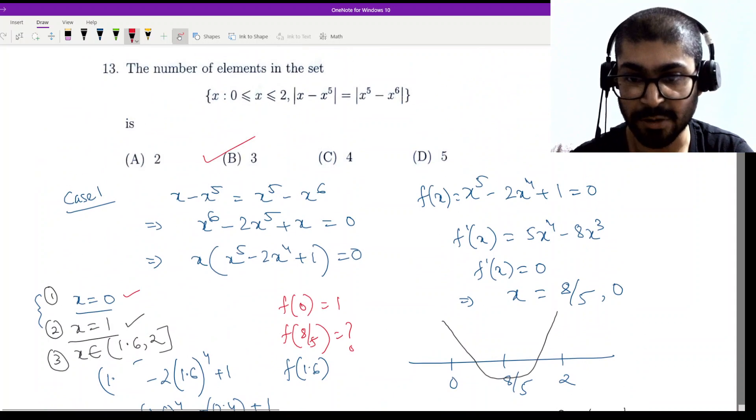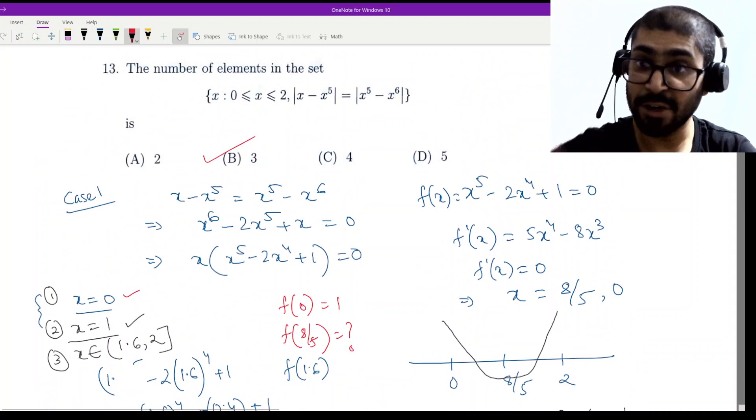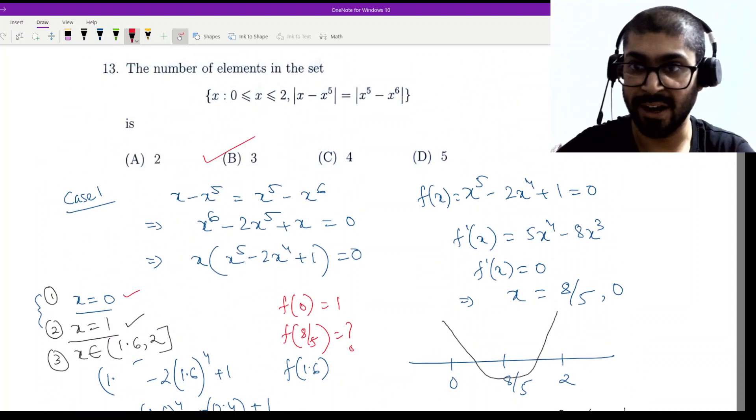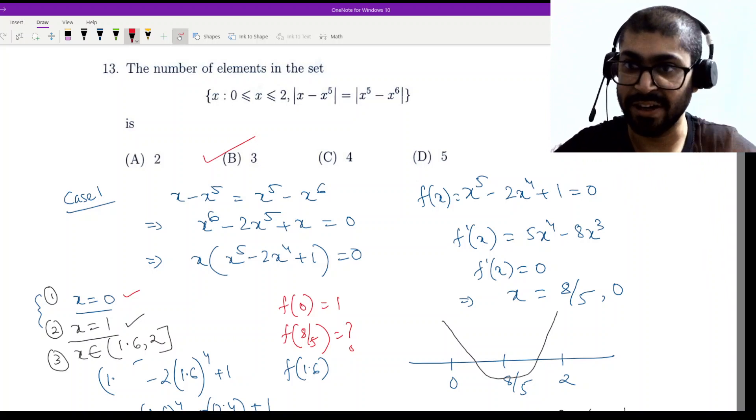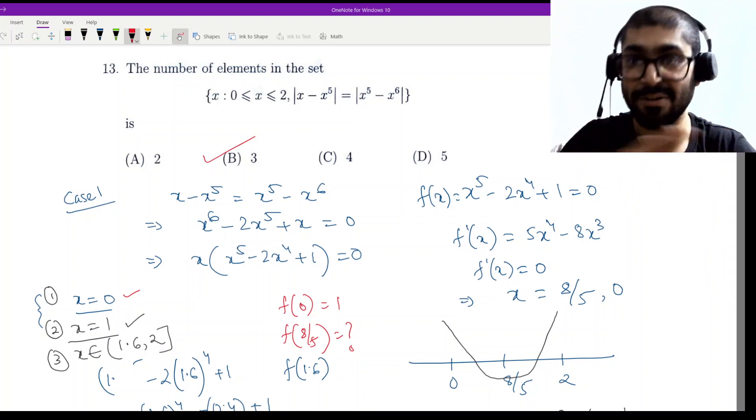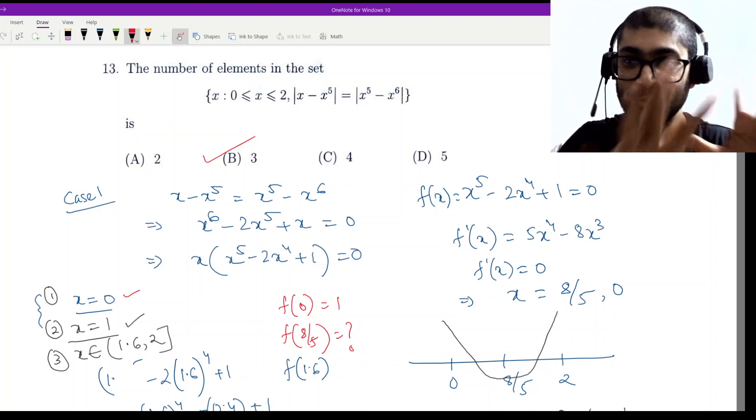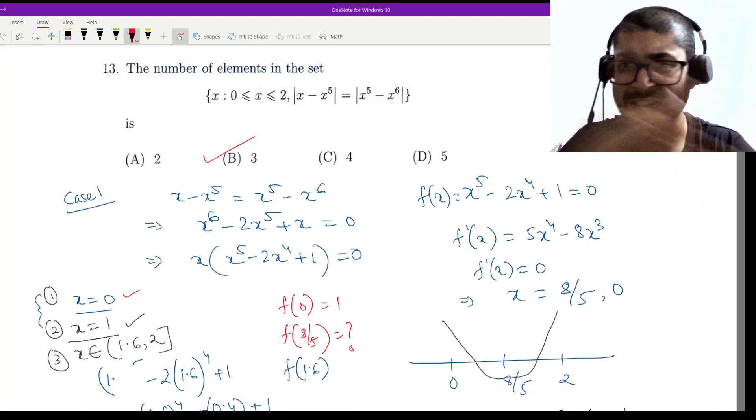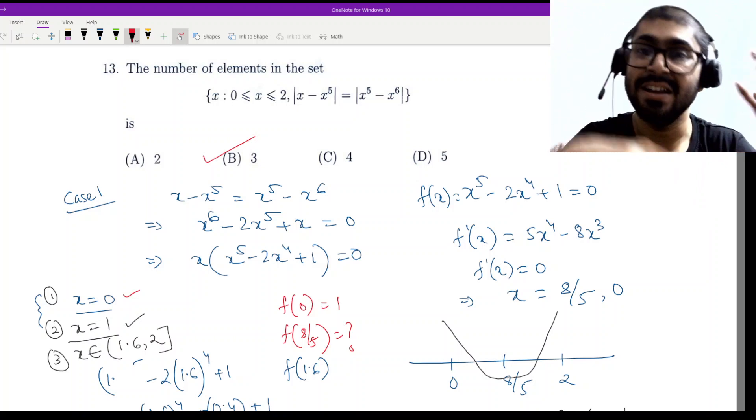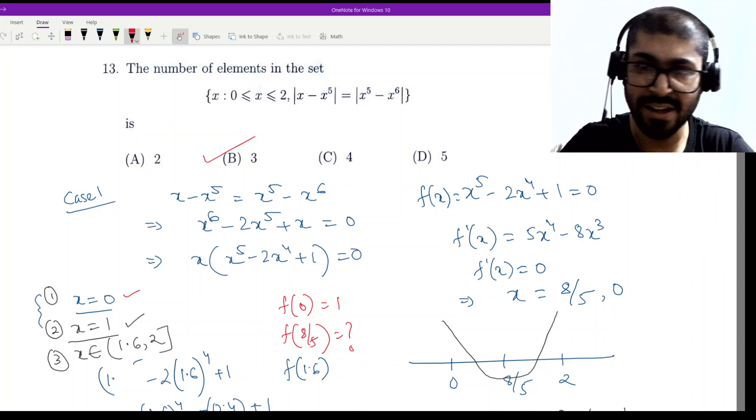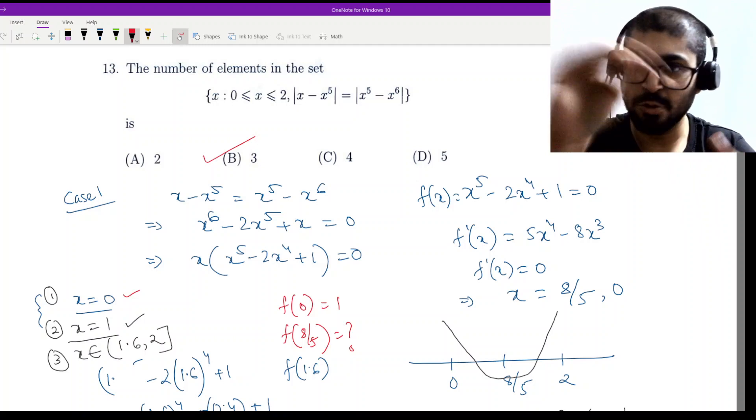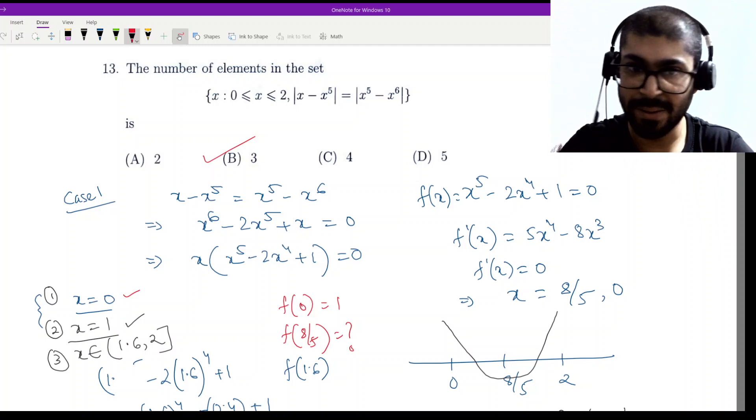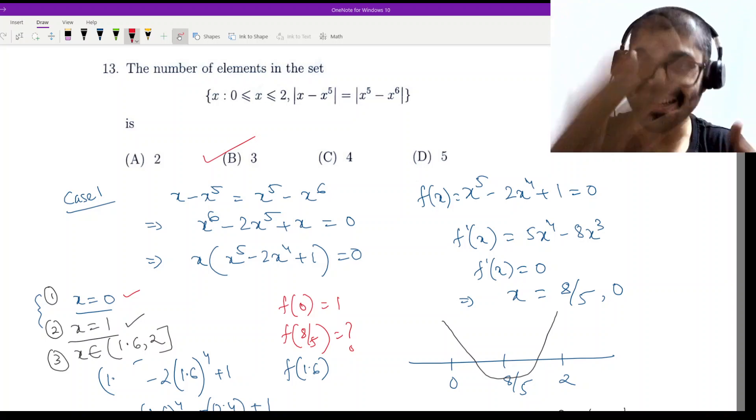So in a set, elements don't repeat. Therefore, however many unique solutions come, those we have to put here. So the number of elements will be 3. This was a slightly long question. I had already told you that one-liners will be a bit difficult because there are fewer hints. Hopefully you understood this.